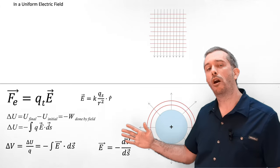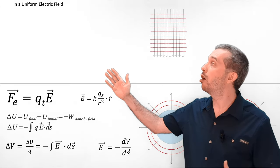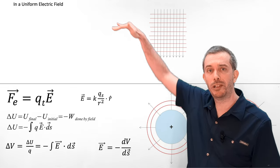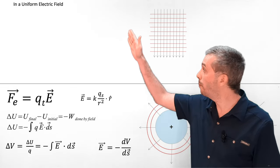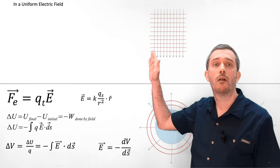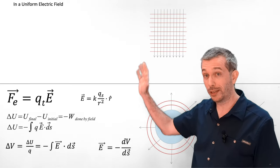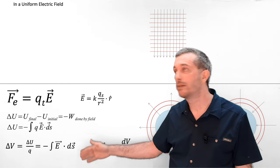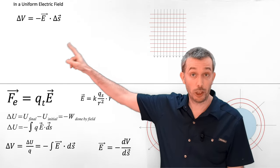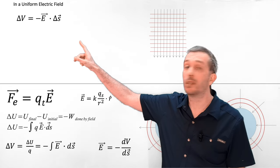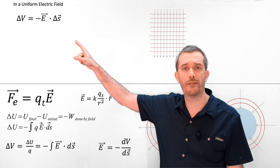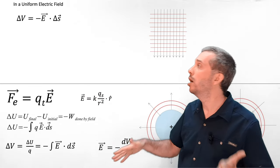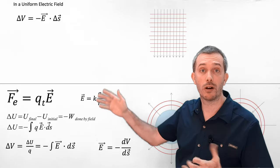All of this becomes very simple and very useful if we talk about uniform electric fields — for example, between two charged plates where the field lines are parallel and where the magnitude of the field is the same no matter where you are. In this case, the integral simplifies to the dot product between the electric field and the displacement between two points in the field. Don't forget that there is a minus in front of it because of the way the change in potential energy was defined.